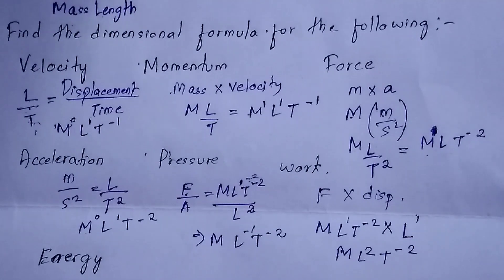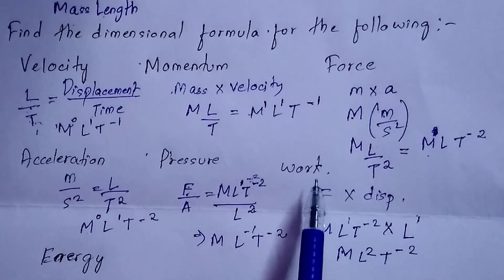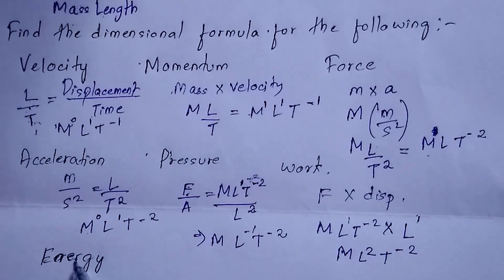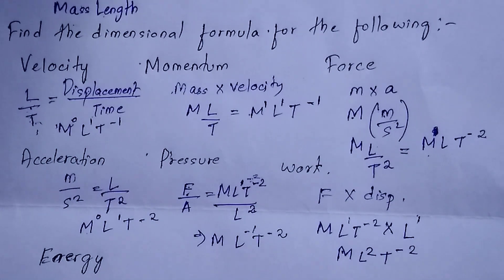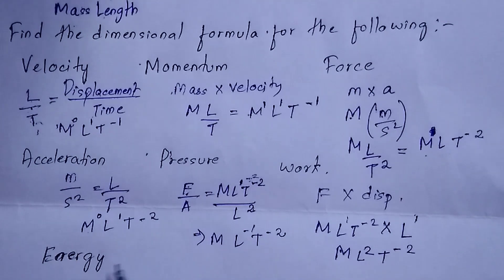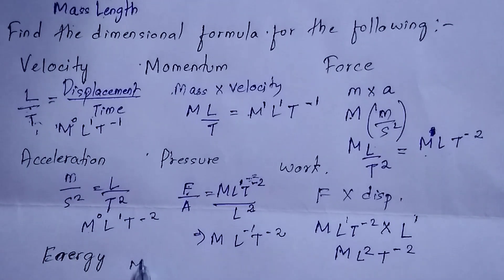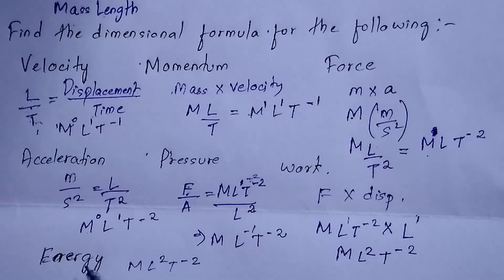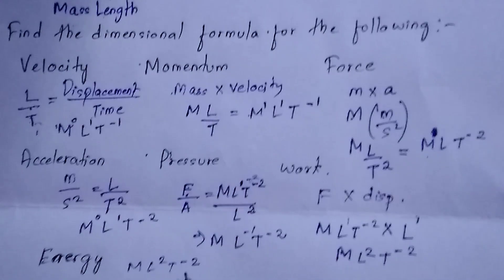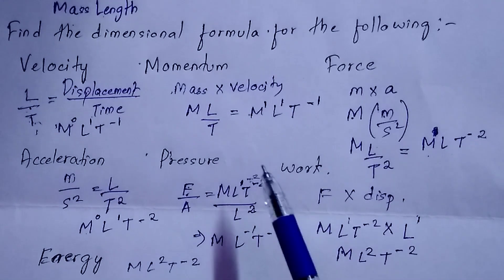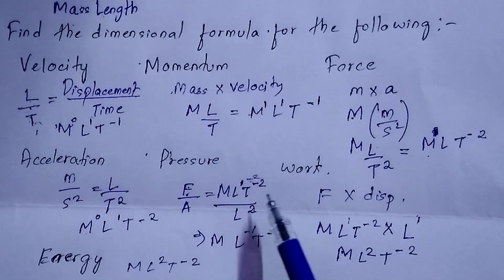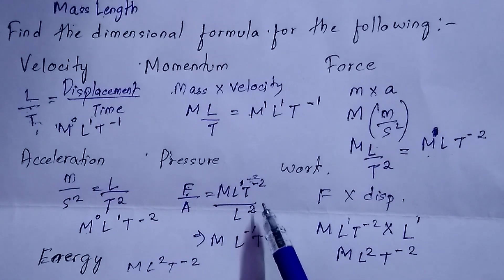The SI unit of work is joule, and the SI unit of energy is also joule. Since the SI unit is the same for both, the dimensional formula is also the same. So the dimensional formula for energy is also ML²T⁻². If you are asked for kinetic energy, that is also energy, so the same formula: ML²T⁻². This is common for both ISC and CBSE class 11 physics.